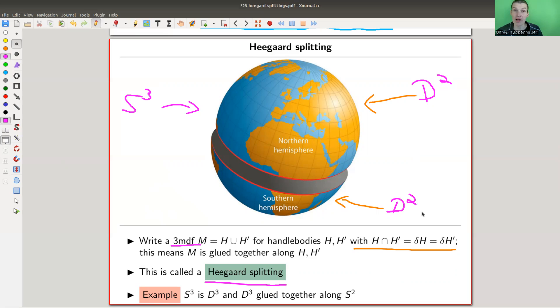And that's exactly what a Heegaard splitting is, because the northern hemisphere is just a disk, it's D², the southern hemisphere is just a disk, it's D², which is a very boring handle body. But it's now glued together along the common boundary.